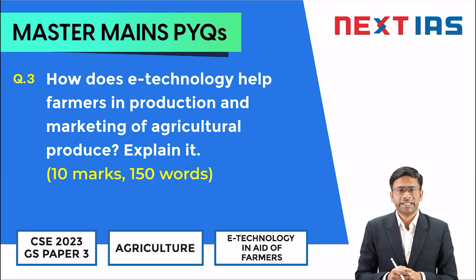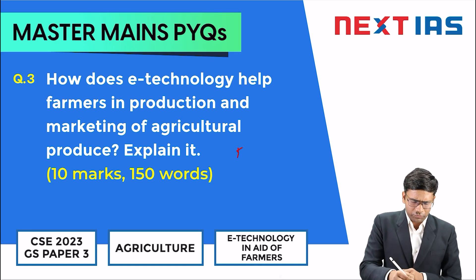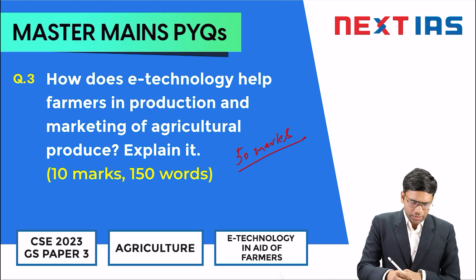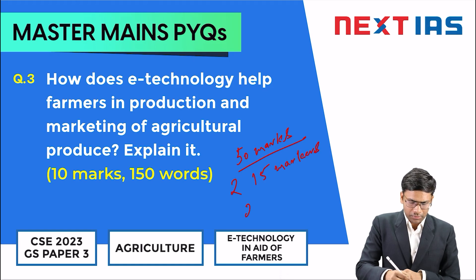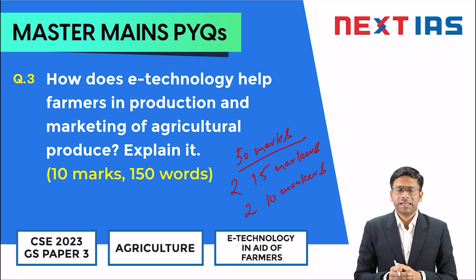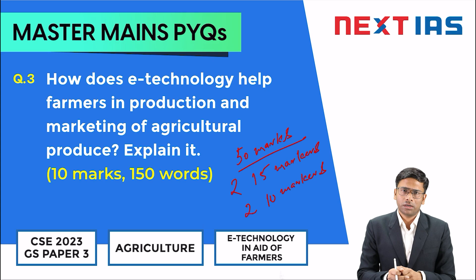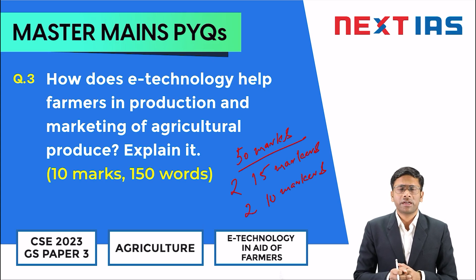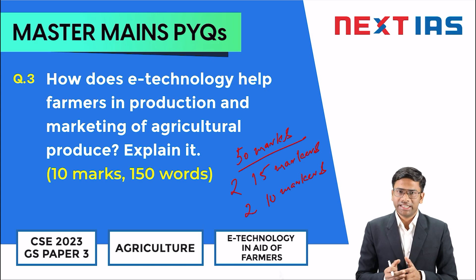Agriculture is a part of GS3. If we see the importance of this particular portion, every year 50 marks come from this portion — two 15-markers and two 10-markers are being asked. The nature of the questions is very direct, asked straight from the syllabus. If we cover the syllabus comprehensively and also practice previous year questions, we can prepare the content in a very holistic manner.